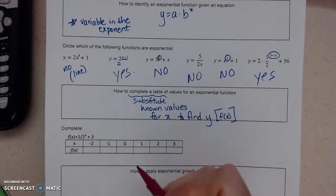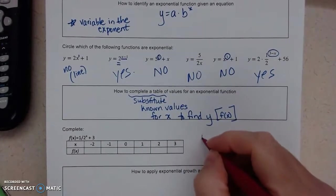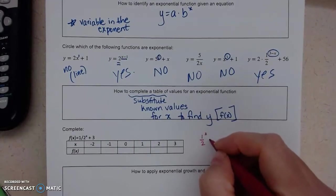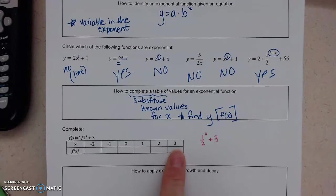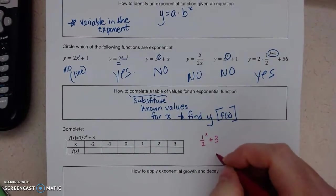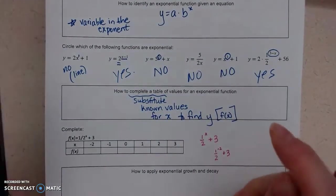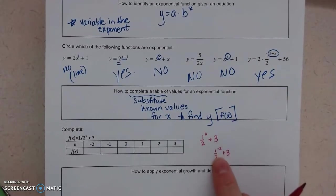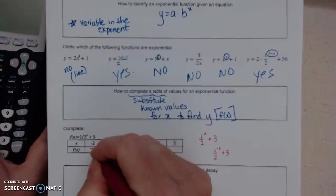So I've got this table right down here. I'm going to do my work over here. So I've got 1 half to the x plus 3, and they give us six values to use. If x equals negative 2, I've got 1 half to the negative 2 plus 3. So you can type that in, or 1 half squared is 1 fourth, the reciprocal is 4, 4 plus 3 is 7.